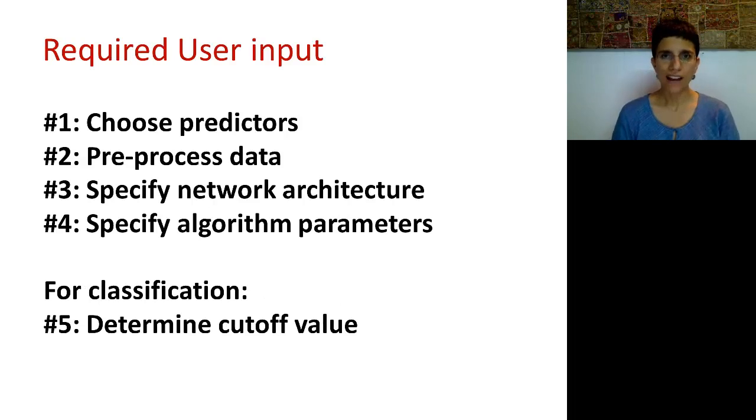We're going to look at five particular steps. First, like in any predictive algorithm, we're going to have to choose predictors. Unlike some other methods that might do some variable selection for us, neural net is not going to be that generous. At step two, we're going to talk about some pre-processing steps that help with improving the results. And then we're going to specify the architecture, meaning the layers and how many nodes and that type of information.